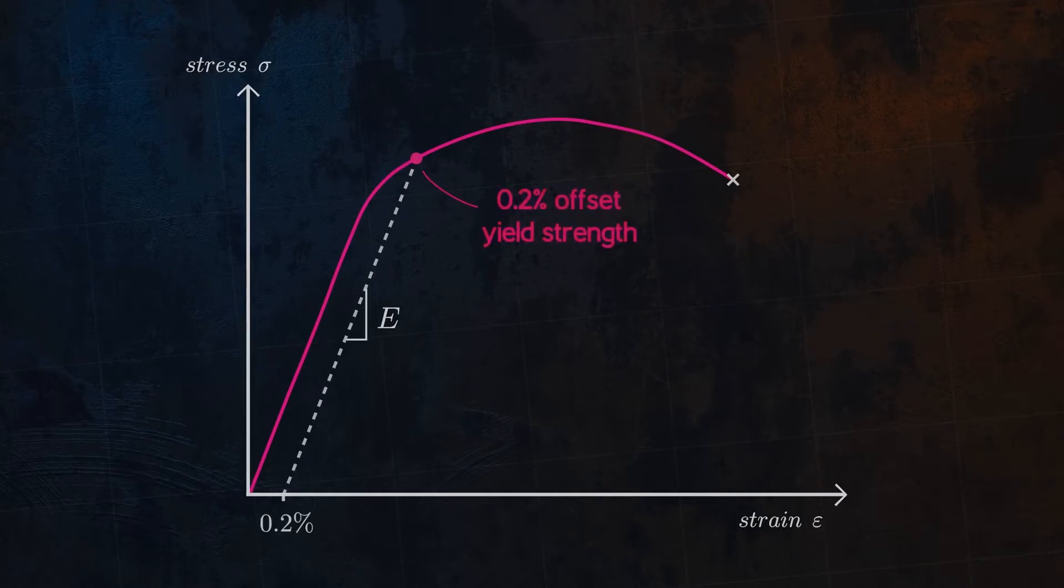This involves drawing a line with the slope equal to Young's modulus and shifting it 0.2% to the right on the stress-strain curve. So far, we have only discussed the strength in the tensile direction. But what about the compressive direction?